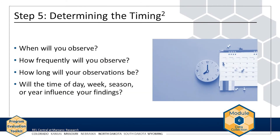Next, determine when and how frequently you will conduct observations. Taking action after only a single observation can be misguided, so consider the number of observations needed. For example, the AMP evaluation team needs to observe AMP participants at least three to five times to get a clear idea of barriers to completing homework. Also determine how long your observations will be. Observations should be long enough to capture the beginning, middle, and end of what you are interested in observing, whether it is playtime, program implementation, or a lesson.